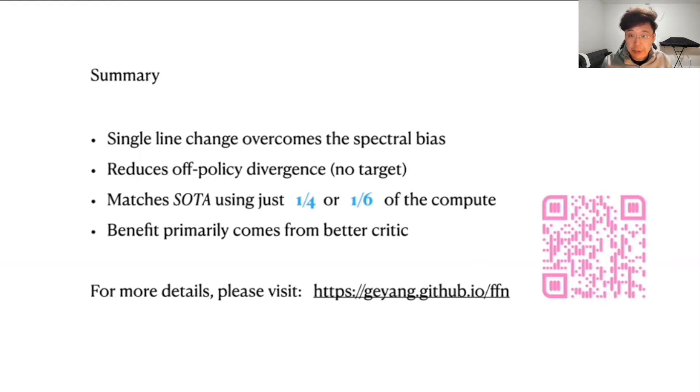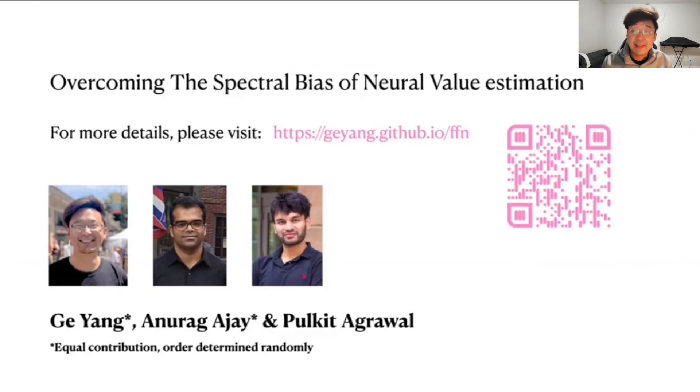This one-line change reduces off-policy divergence to the extent that we can remove the target network on many domains, which further reduces the bias in the function approximation. And for more details, please refer to the project website. And thank you for listening.